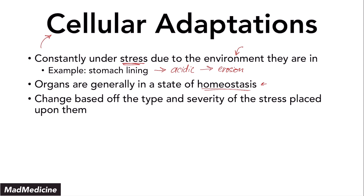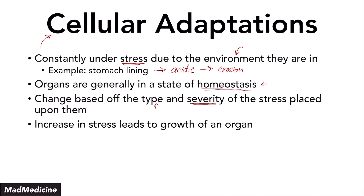The changes that occur to our body at both the cellular and organ level are based on the type and severity of the stress. Both the type and severity play a role. But regardless, once you put stress on an organ, that organ is going to grow. An increase in stress is going to lead to growth — stress will lead to increased size.